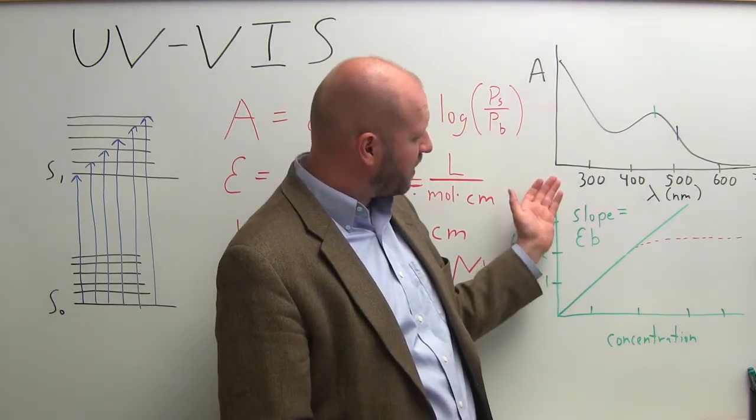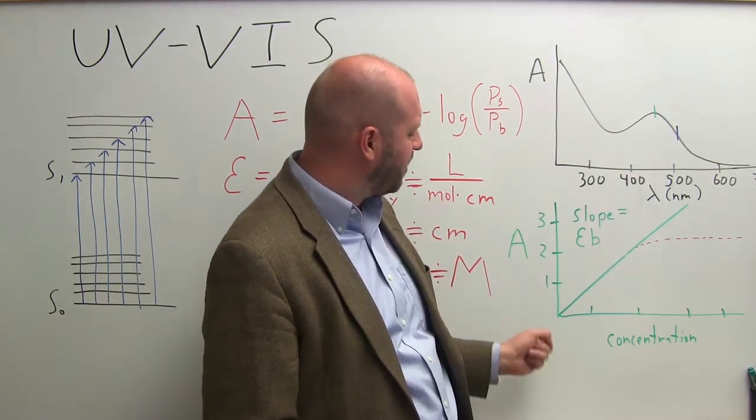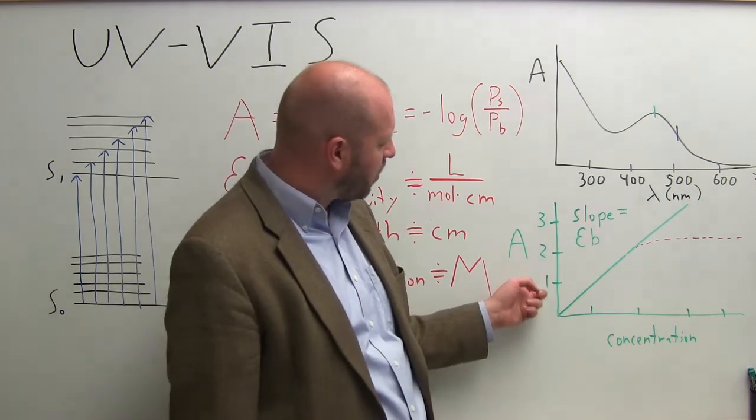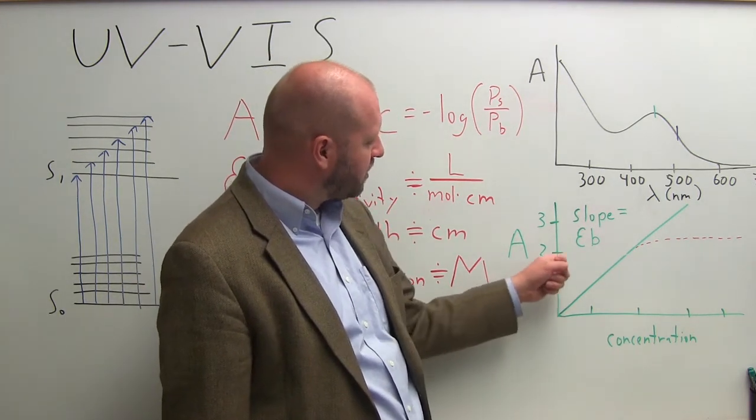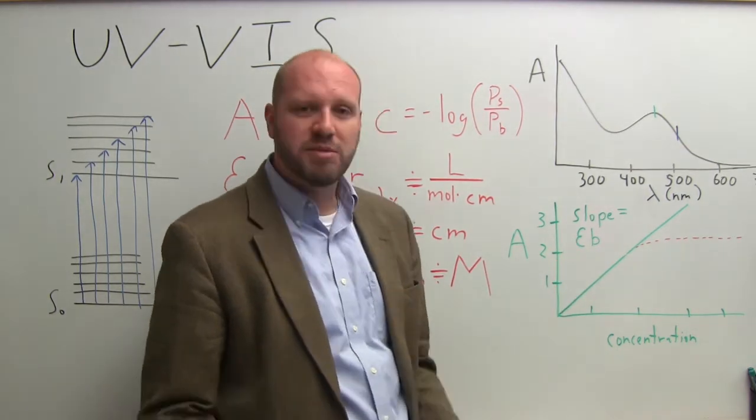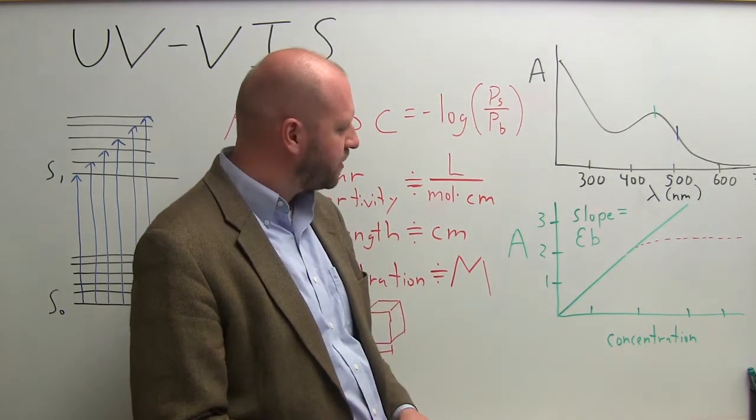Now, as I vary the concentration, I'm going to measure the absorbance at 450 nanometers and generate a calibration curve that looks something like this. Here I have absorbance versus concentration. You can see the slope of this graph is going to be equal to the molar absorptivity coefficient times B, and I can use this to calculate the molar absorptivity coefficient.